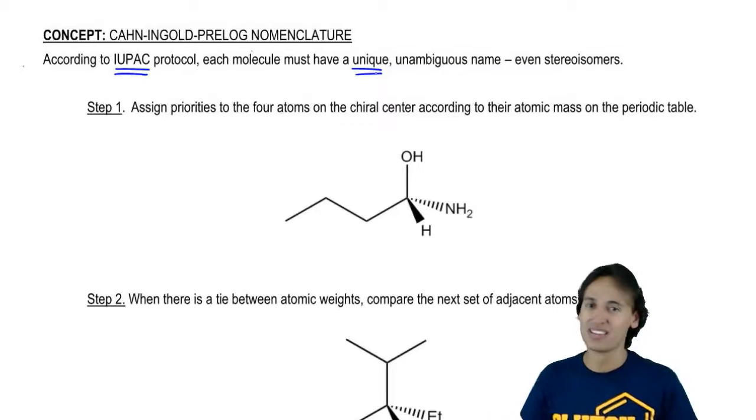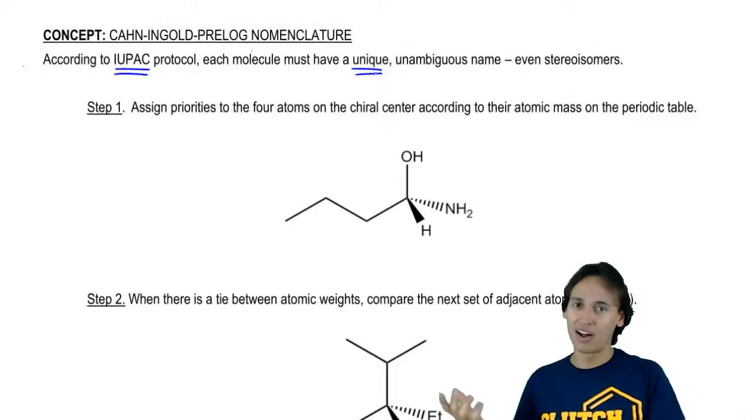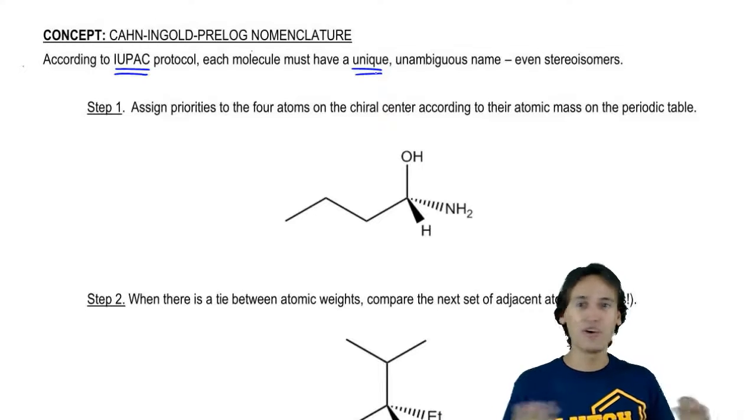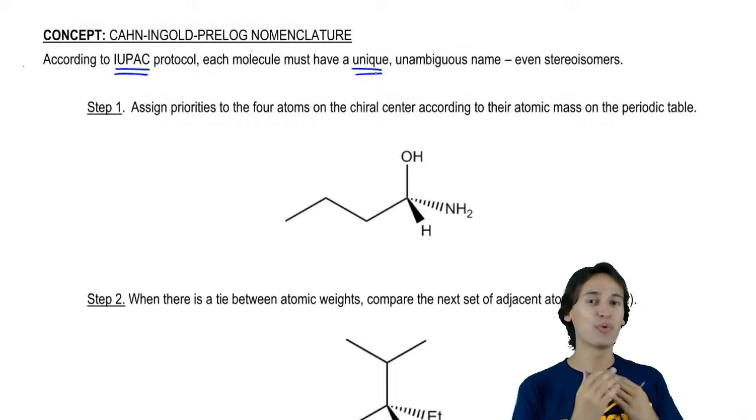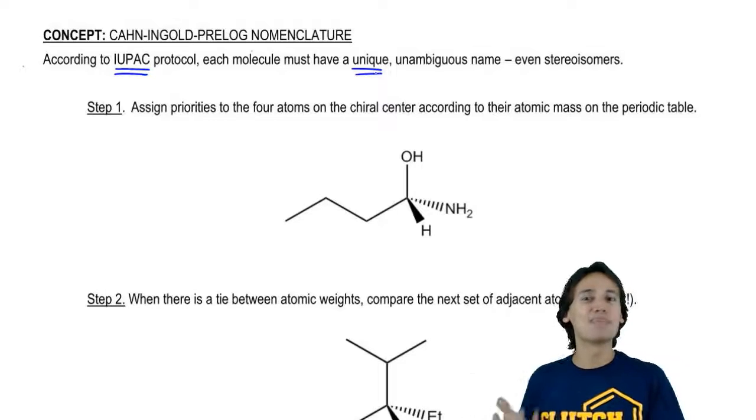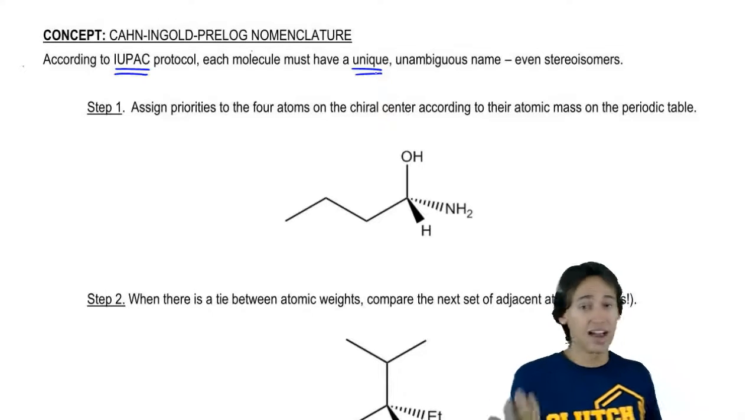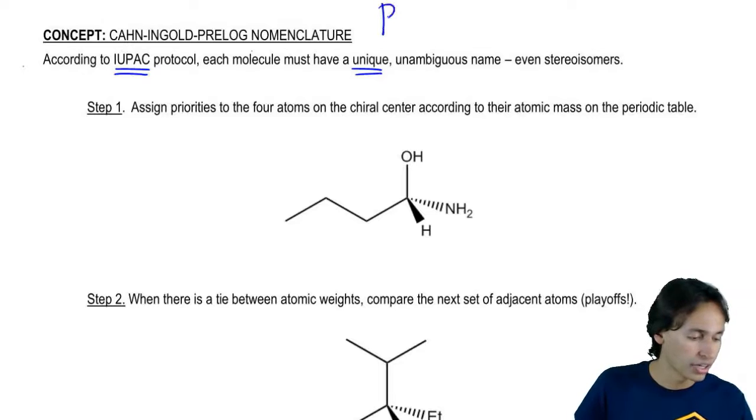That extra step is called the Cahn-Ingold-Prelog nomenclature. I know that name blows. What we're going to be doing is we're not going to be using that name so much. That's the technical name that's in your book. I like to just call it the R and S naming system.